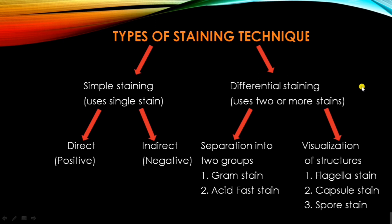In gram staining, we subdivide bacteria into gram-positive and gram-negative. In acid-fast staining, we subdivide into acid-fast bacilli or non-acid-fast bacilli. Another type of differential staining is used to visualize the structures of bacteria. Examples include flagella stain, capsule stain, and spore stain.